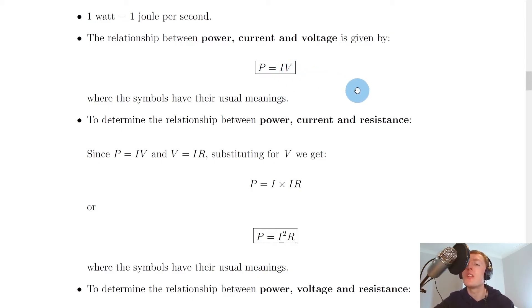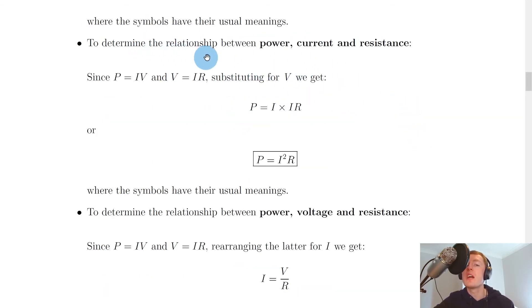So power is equal to the current times the voltage. So if you have the current passing through a component and the voltage across that component, then you can calculate its power, and it says where the symbols have their usual meanings. So we've already talked about in previous videos what current and voltage are and their units.